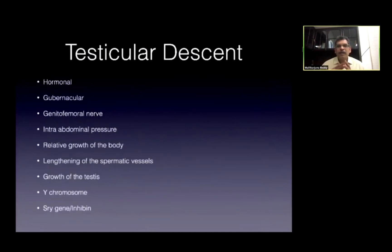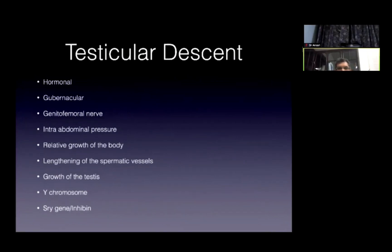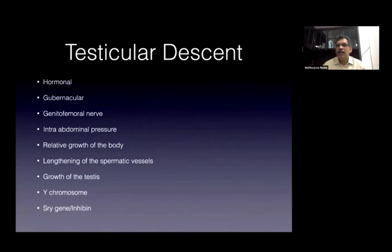Do we have any specific idea in terms of what are the primary causes of mal-descent of the testes? There have been a lot of postulations put forward — hormonal ones, including a decrease in LH and a decrease in MIS. A lot of things have been proposed, but none has been specifically proven etiologically for testicular mal-descent. Then came the gubernacular theory, and then the genitofemoral nerve, which is said to act as an important stimulant for the descent of the testes.